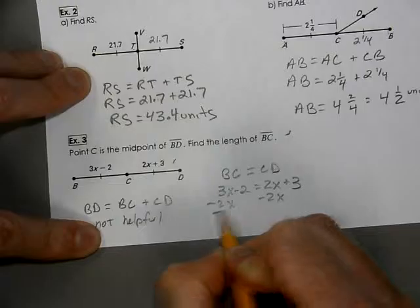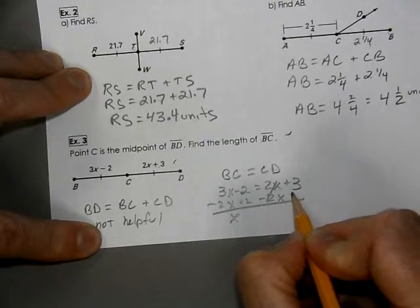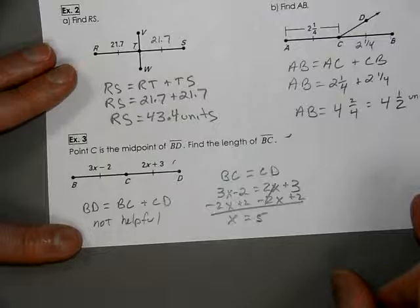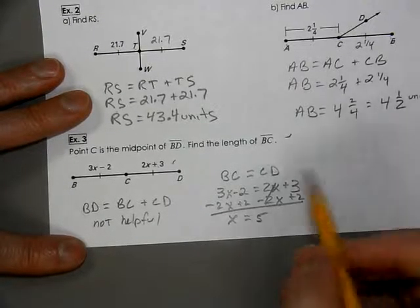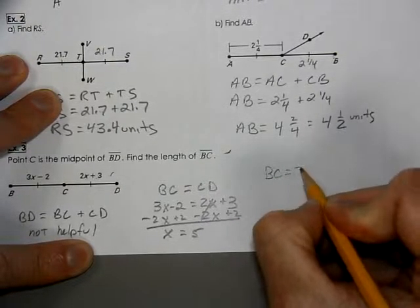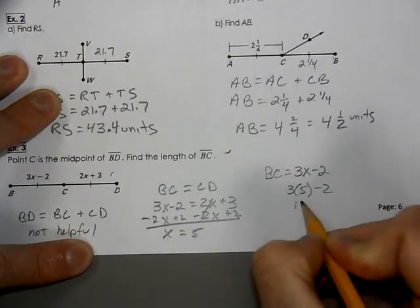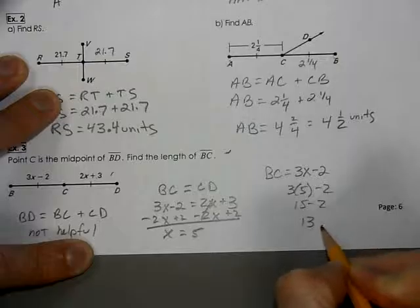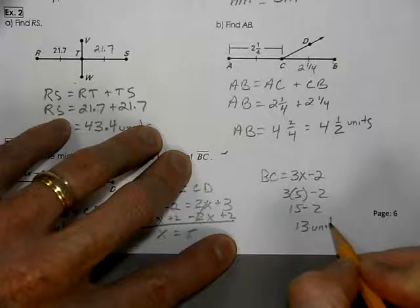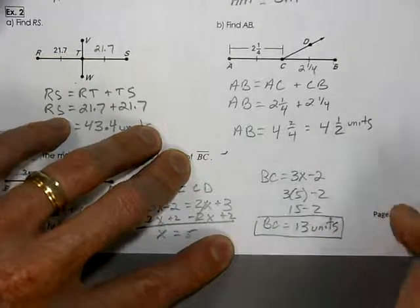Now we will subtract. We'll add the 2 to the other side, and we get that X equals 5. If X equals 5 and we have to figure out what BC is, BC is 3X minus 2. So that's 3 times 5 minus 2. 15 minus 2 is 13. That's 13 units. That's the answer.